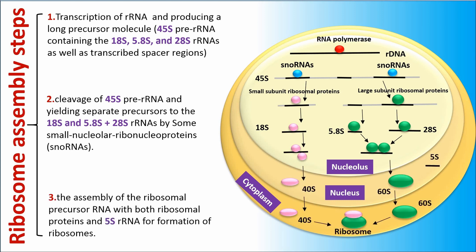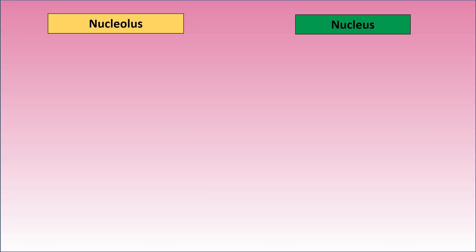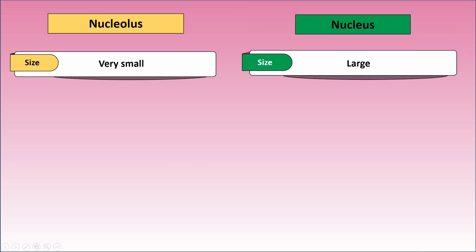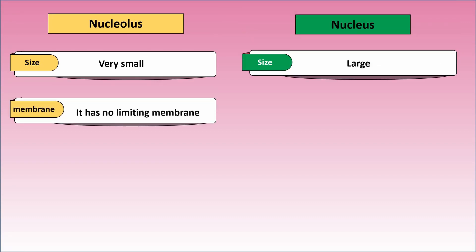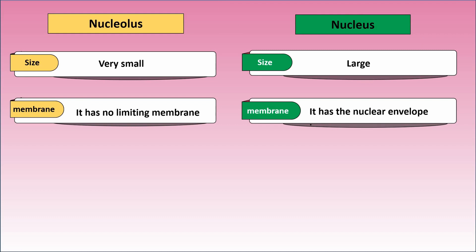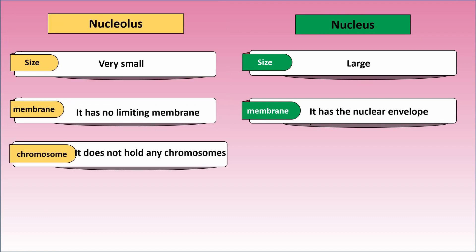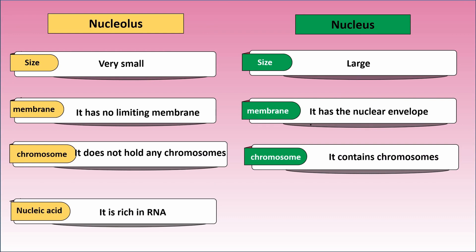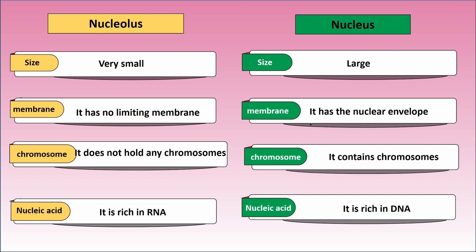Step three: the assembly of the ribosomal precursor RNA with both ribosomal proteins and 5S rRNA for the formation of ribosomes. Comparing Nucleolus with Nucleus: the Nucleolus is very small but the Nucleus is large. The Nucleolus has no limiting membrane but the Nucleus has the nuclear envelope. The Nucleolus does not hold any chromosomes but the Nucleus contains chromosomes. The Nucleolus is rich in RNA but the Nucleus is rich in DNA.